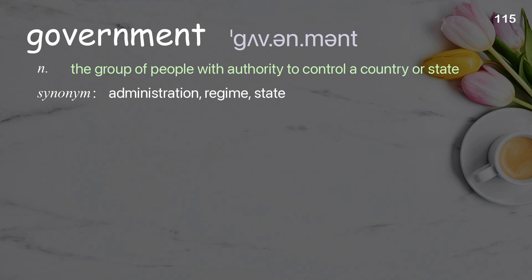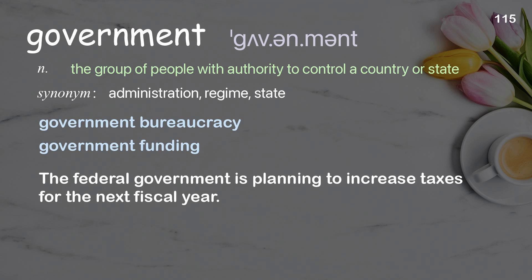Government. The group of people with authority to control a country or state. Examples: government bureaucracy; government funding. The federal government is planning to increase taxes for the next fiscal year.